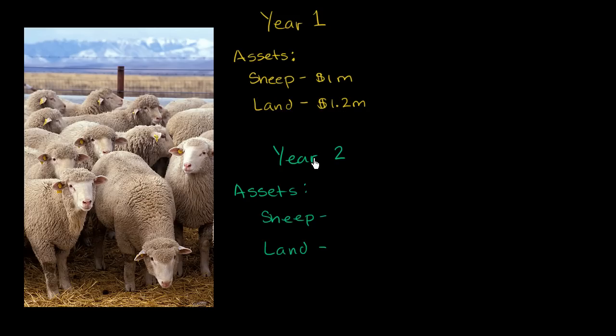Now let's go to year two and think about how to account for the sheep and land. One way is to say, the sheep are still there, the land is still there. I paid $1 million for the sheep, and they're all still there, so I'll put on my books that the sheep are still $1 million. I paid $1.2 million for the land, so I'll put on my books that the land is $1.2 million. In this situation, I've accounted for the sheep and land based on their historical cost.